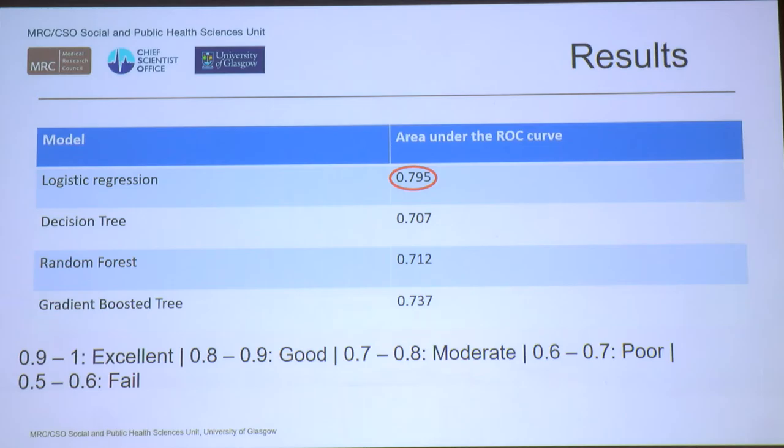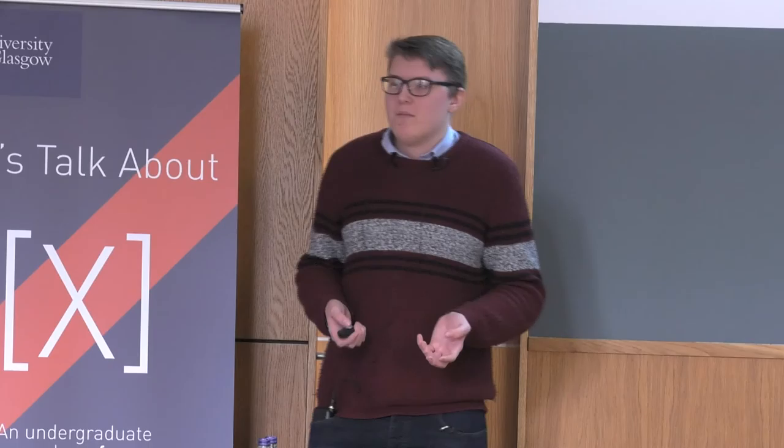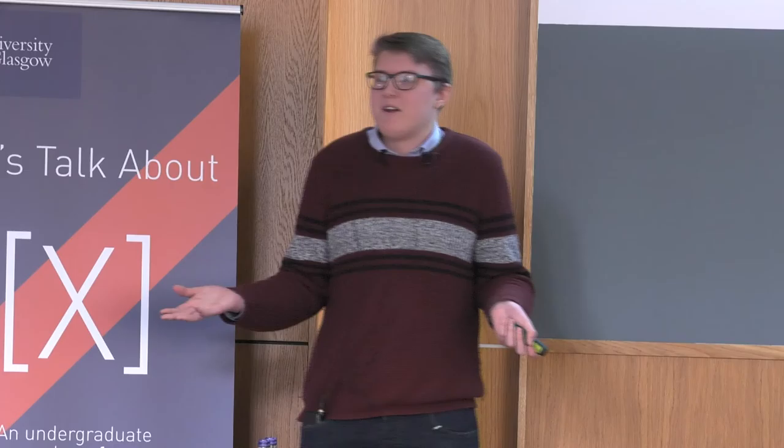Once we identified the best performing model, we wanted to quantify how much being overweight at an earlier age impacts prediction of being overweight later. One of our predictors was BMI at 27 to 30 months, so we ran the model with it and without it. There's quite a drastic difference: 0.795 with BMI included — moderate to good — versus 0.613 without it, which is essentially a moderate to poor model, verging on a fail.